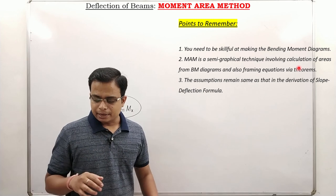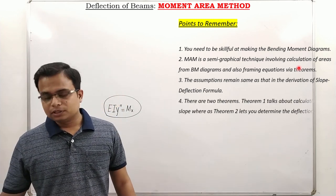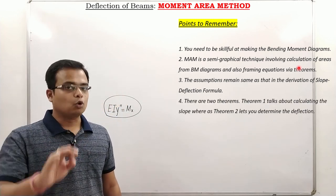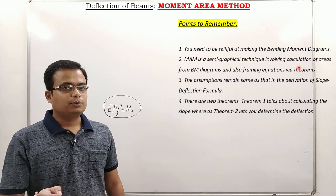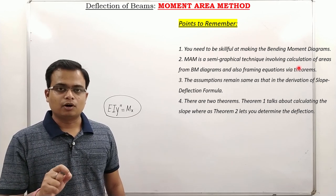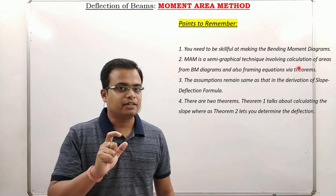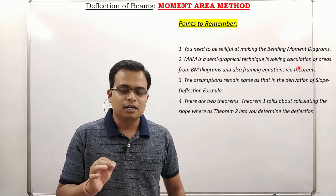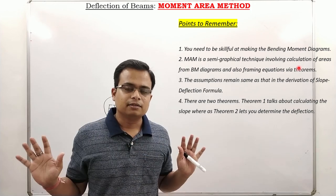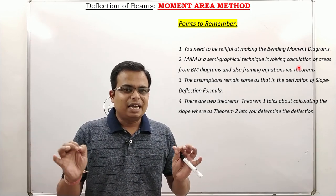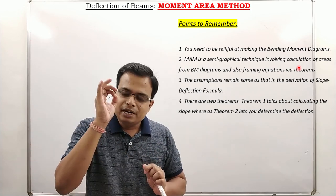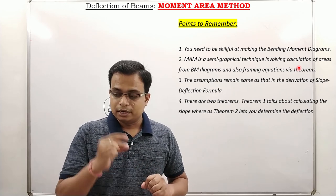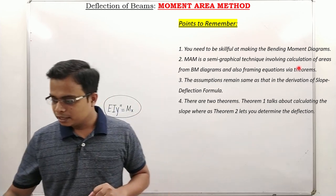The assumptions used when deriving that formula will be the same for the moment area method as well. Finally, there are going to be two theorems: Theorem 1 is going to be all about slope, and Theorem 2 is going to be all about deflection or the vertical displacement of tangents. Each and every detail will be conveyed — not to worry.